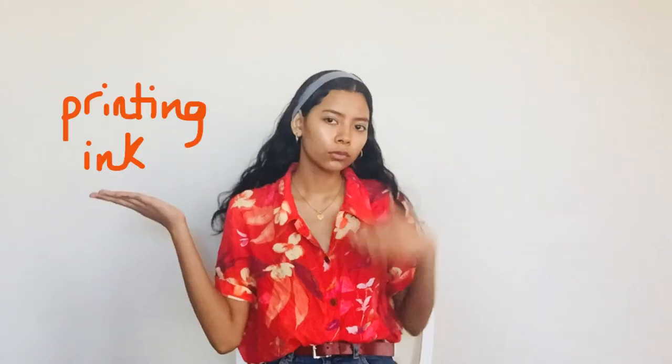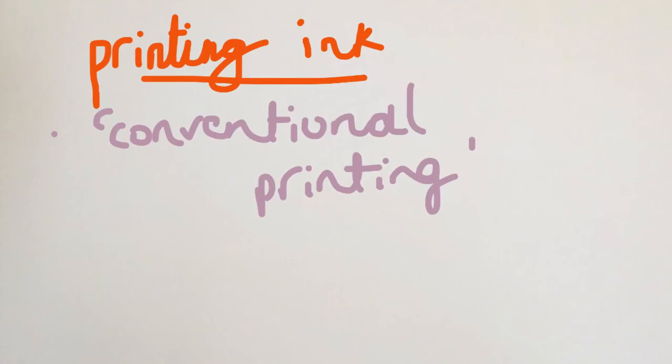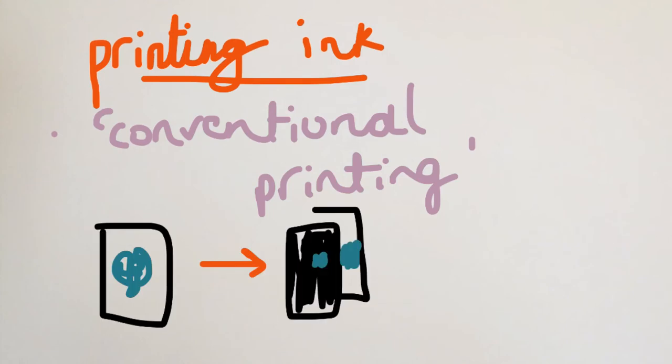There's actually two main types of ink, printing ink and writing ink. Printing ink is used for conventional printing and digital non-impact printing, with the former basically consisting of transferring the image onto another surface with a mechanical plate.